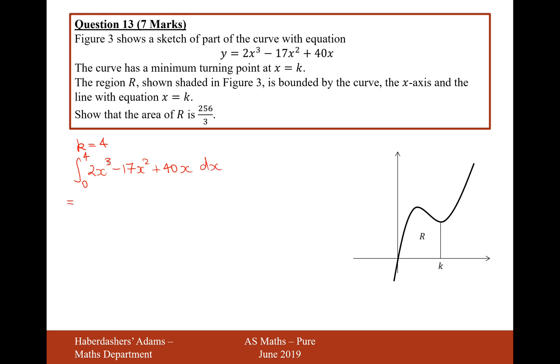So, let's now integrate. You're increasing the power by 1 and then dividing by the new power. So, it's going to be 3 increases to a 4, and then 2 divided by 4 is a half, minus 2 increases to a 3, and then divide by the 3, that would be 17 over 3. And then increase the power by 1, that would be x squared, divide by the new power, 40 divided by 2 is 20. That would be between the boundary of 4 and 0.